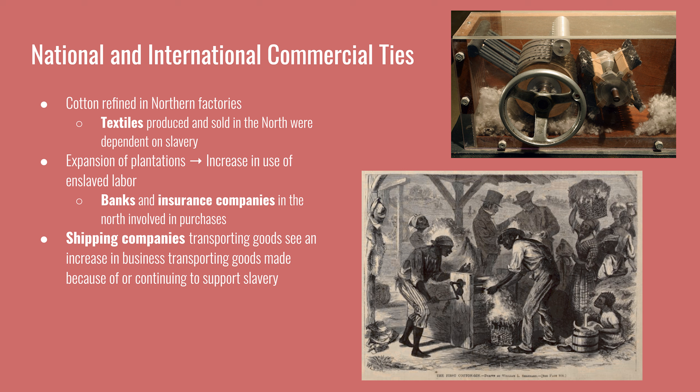Most large financial institutions in the country at this time were located in the North and benefited from the sale of human beings. Shipping companies based in the North also benefited, as profits from transporting cotton goods were tied to slavery. While the moral stance of northern states may have differed, cotton was so closely tied to economic growth that everyone in the country benefited from it, and slavery touched every part of the economy.